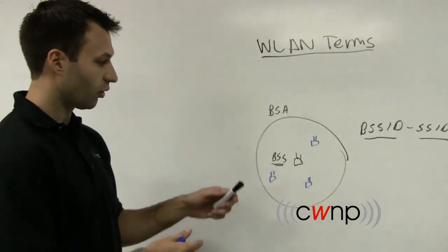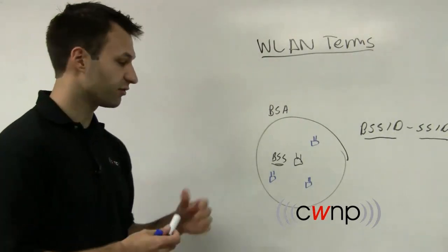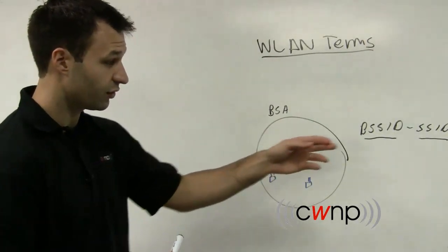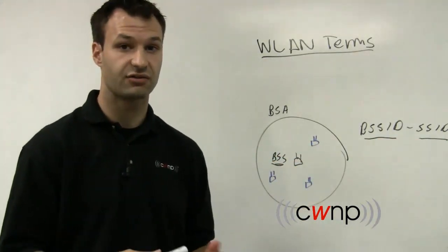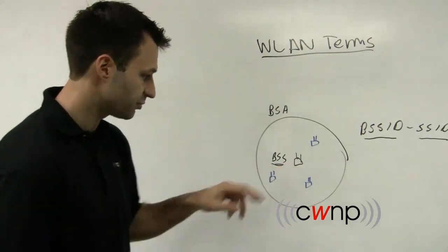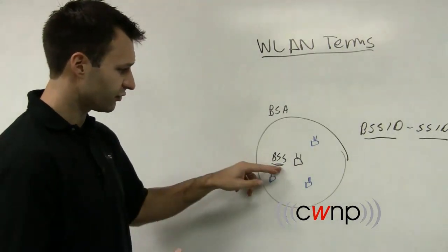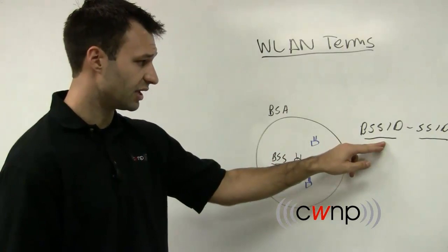When you have multiple basic service sets served by the same access point, so if you're going to have a corporate data and a corporate voice and maybe a guest Wi-Fi SSID, three SSIDs on the same access point, each of those are their own BSS with their own BSS ID.